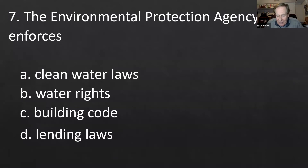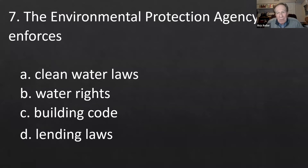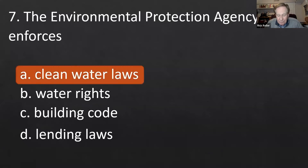Number seven: the Environmental Protection Agency — the EPA — enforces what? Options: clean water laws, water rights, building codes, or lending laws. Water rights is the state engineer's office. Building codes are planning and zoning. Lending laws are mostly federal. The correct answer is clean water laws. The EPA is very concerned about contaminants and definitely wants to keep them out of the water table.